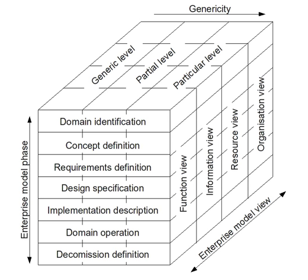The Genericity dimension defines the spectrum from general concepts to particular models. The standard defines three levels of genericity: generic level, partial level, and particular level.